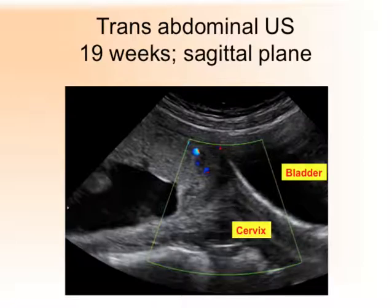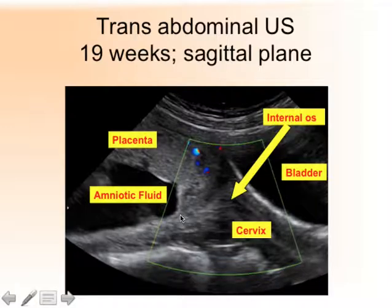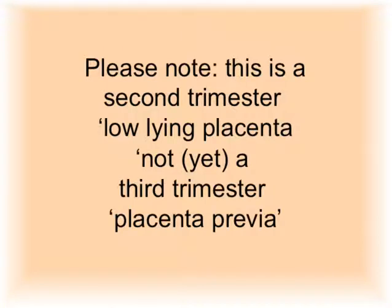On the right-hand side, the black area is a nicely filled bladder. The arrow points at the internal os of the cervix. On the left-hand side, the fluid is the amniotic fluid, and here the grey area is the placenta. It's clear that the placenta covers the os — it's located on the anterior uterine wall. Please note: this is a second trimester, per definition low-lying placenta, and not yet a third trimester placenta previa.